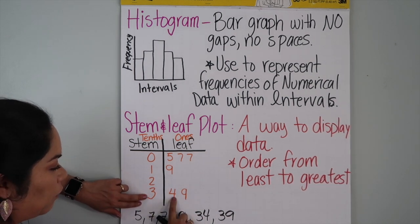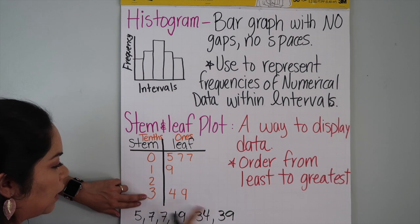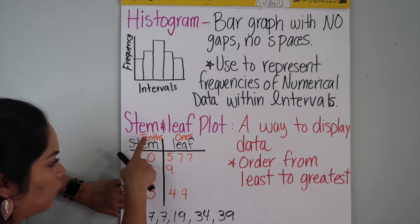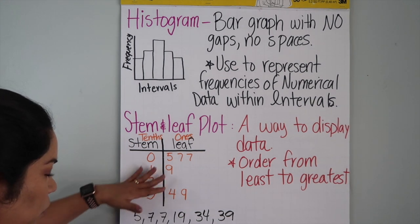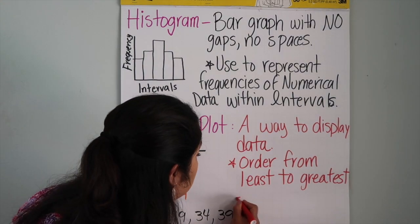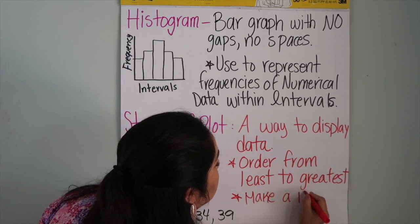Three and four means 34, three for the tens place, four for the ones, and 39, three for the tens and nine for the ones. That's how you read it. The last thing we want to also include here, we need to make a key.